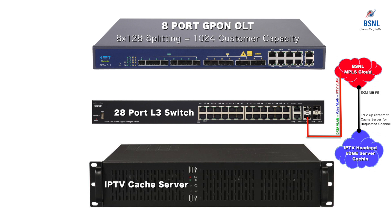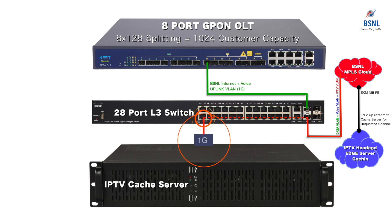Once the IPTV provider is provided with their VLAN, the same will be available for access everywhere at PE router locations in India. The NIB teams all over India can extend the IPTV VLAN to any TIP serving in their area. Thus, the three VLANs are available at the port of the L3 switch. The data and voice VLANs will be switched to the OLT uplink port, and the IPTV VLAN will be switched to the cache server by the switch. In most cases, the cache server has a 1 Gbps port on the uplink side towards the BSNL MPLS and a 10 Gbps port on the downlink side towards the OLT — the reason for which will be explained later.